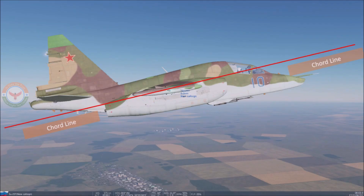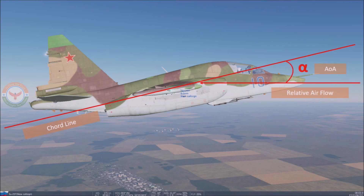In this picture I have traced the chord line of the Su-25 Frogfoot. The relative airflow intersects the chord line at an angle and that angle is called the angle of attack. Generally, a positive angle of attack causes a positive lift.